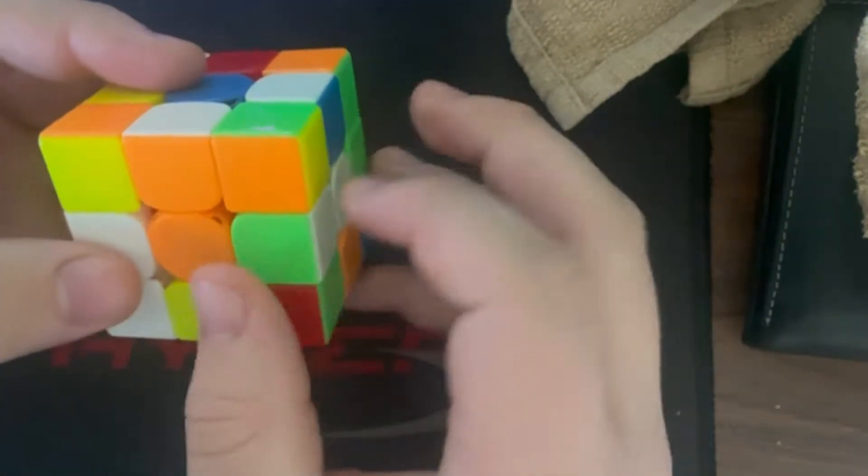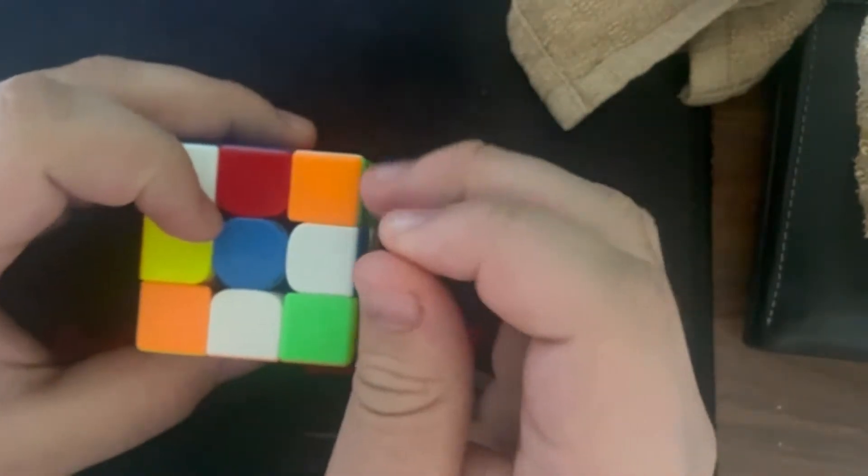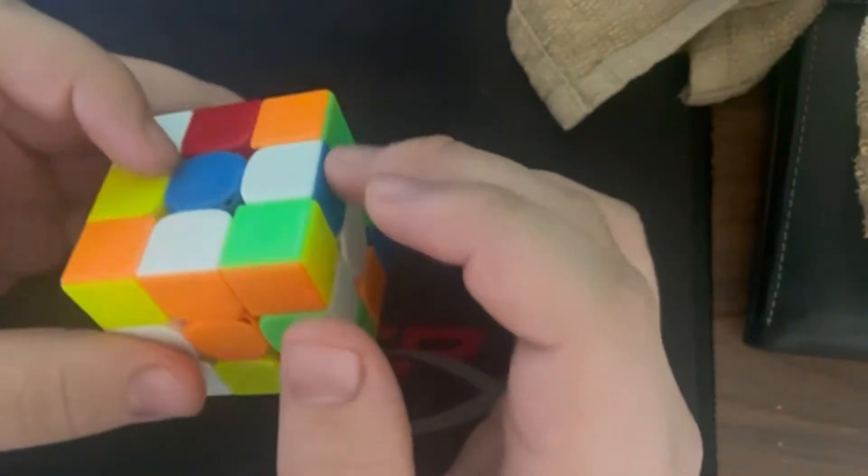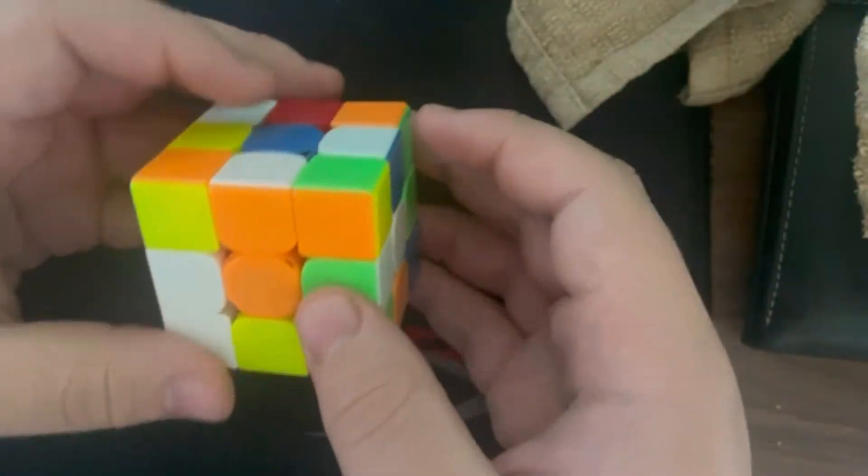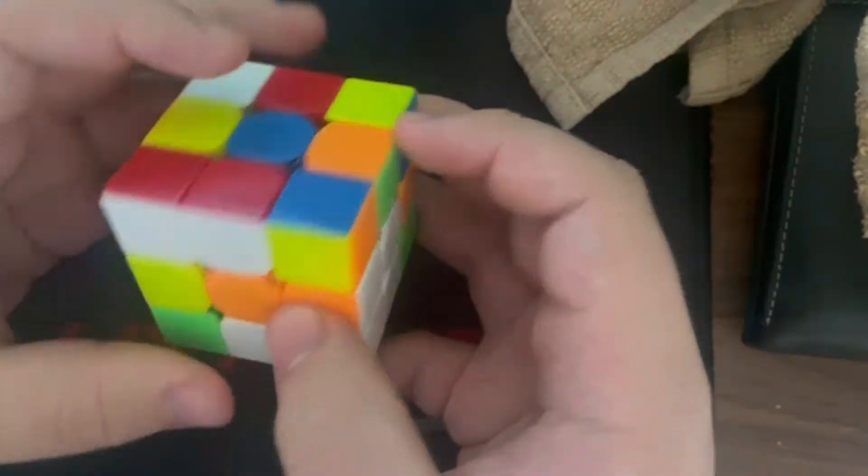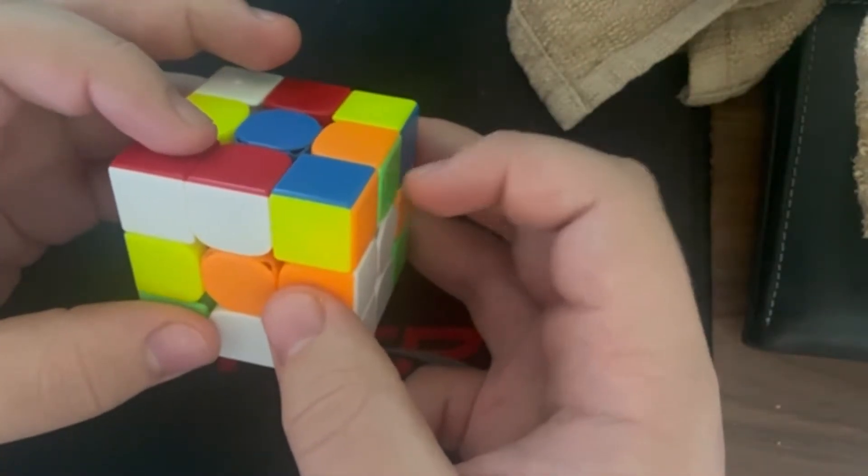And then I was looking at green cross, and I saw that I could get a double x-cross if I did r' f as my first true moves, because that would set up this pair, and then I could insert it with an f. And then it puts the last cross piece right where I need it to be to insert it.